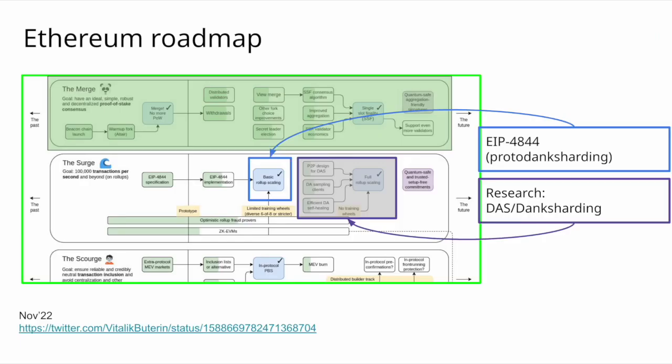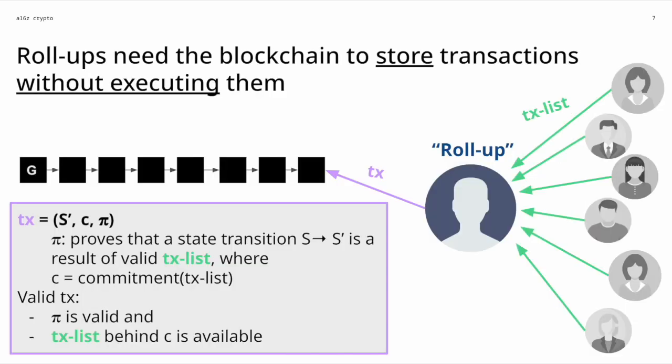Looking at the Ethereum roadmap, the merge is already done. The next step is helping rollups scale. Proto-danksharding will come first, followed by danksharding, which still requires some research and has a number of open problems to be solved.